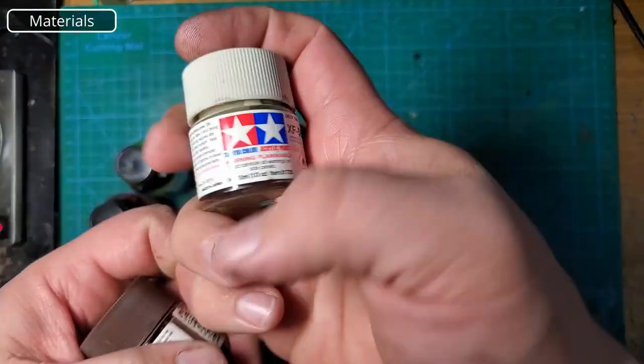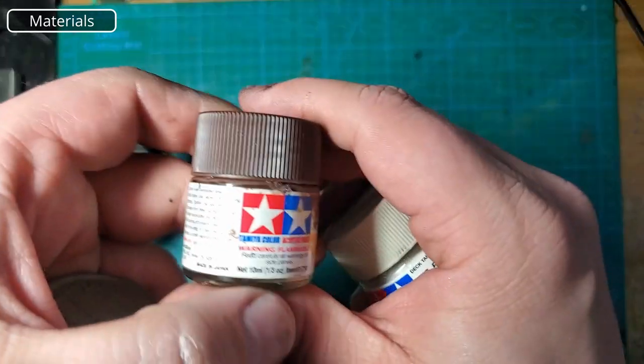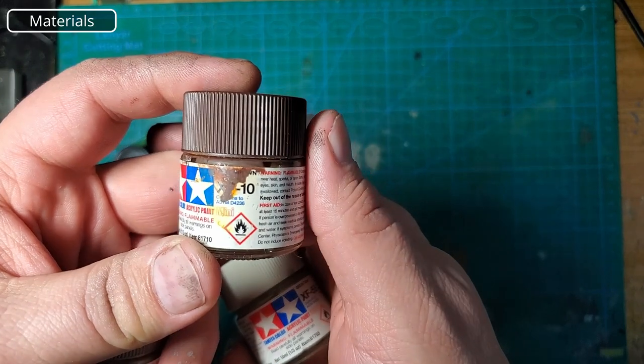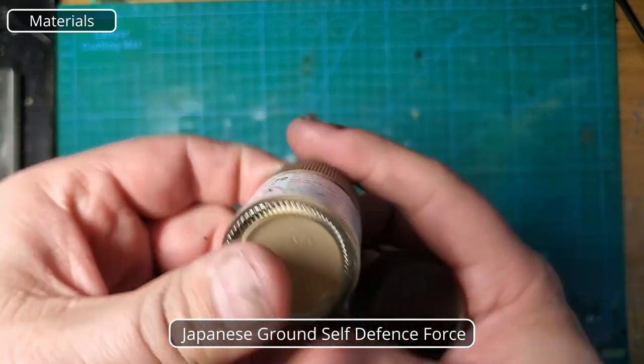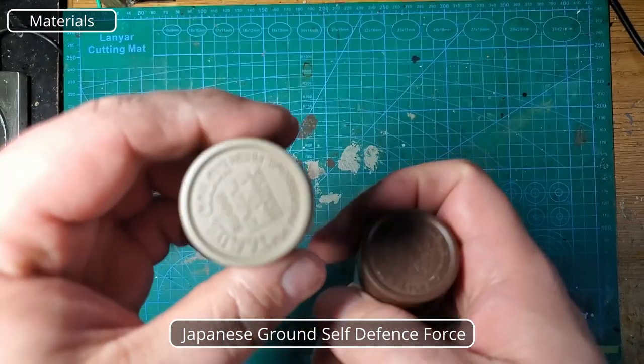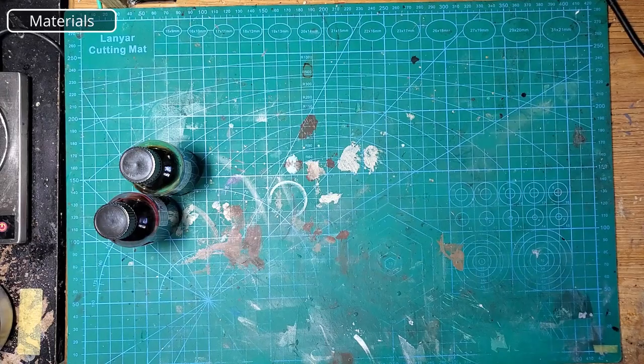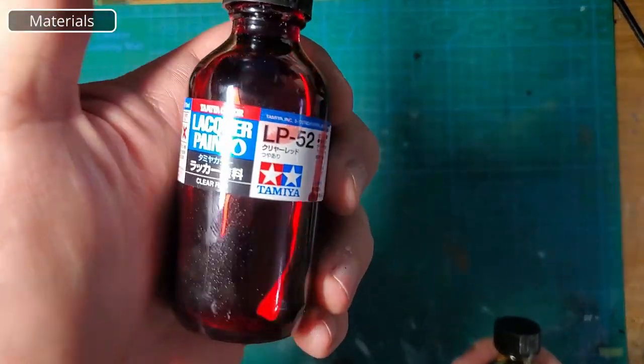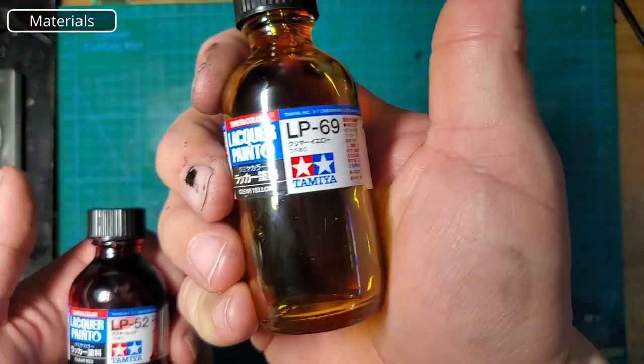We're going to be doing some brush painting with some deck tan, some flat brown, and some brown JGSDF. It's a nice medium-ish brown. We're going to use those to do some brushwork, and we're going to be finishing this off with some clear red and some clear yellow.